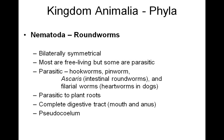Next, Nematoda, my roundworms. Here they have bilateral symmetry. Most are free-living, but some are parasitic. My parasitic roundworms would include the hookworms and pinworms, Ascaris — which are intestinal roundworms — and filarial worms, which we will see as heartworms in dogs. We will also see that some plants are subject to parasitic nematodes as they live in the soil and attack the root system of our plants.